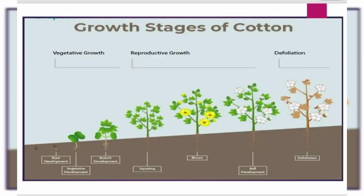Then we see the growth stages of cotton. They are divided into three main parts: vegetative growth, reproductive, and defoliation. We see from the picture the progression from seed sowing to the cotton plant appearing.